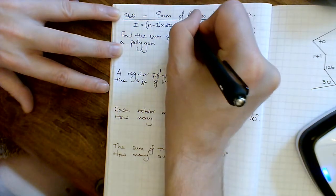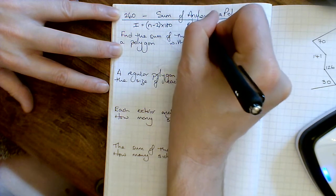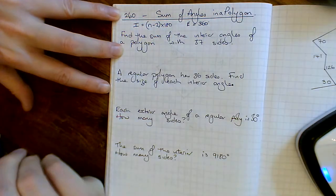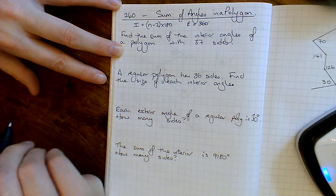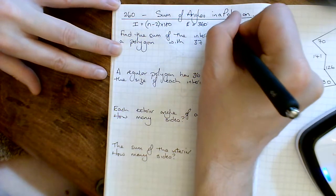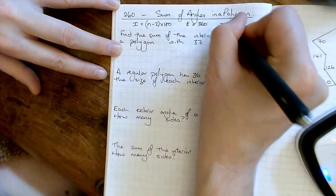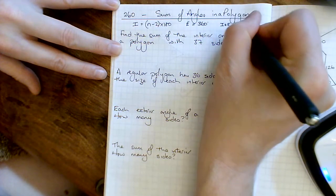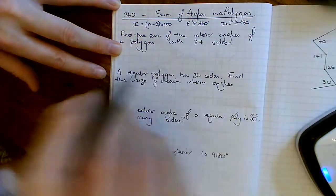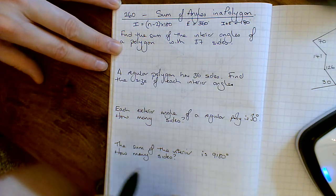For the exterior angles, the nice thing about those is it doesn't matter what shape it is, they're always going to add up to 360, so that's always a brilliant result. And another result is that one inside angle plus one outside angle is always going to be 180 degrees because they're two angles on a straight line.